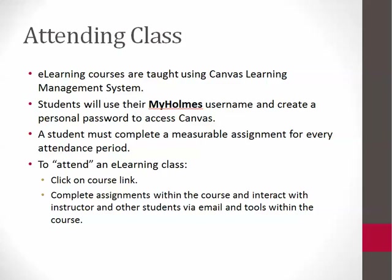You will use Canvas by Instructure to do all of the work for your online course. You will find the link to Canvas on the front page of the Holmes website. You will use your myHolmes username and create a personal password to access Canvas. To create your password, you need to be in Mozilla Firefox or Google Chrome. Click the Create or Reset Password button on the login page, enter your Holmes email address, and click Request Password. Right before classes begin, you will receive an email from Instructure Canvas with the link to set a new password. Right-click the Create or Reset Password link and choose Open in a new window. You will then get the option to create a unique password for Canvas.